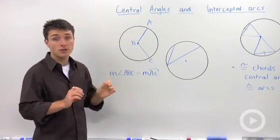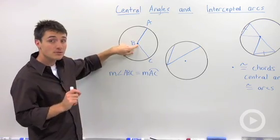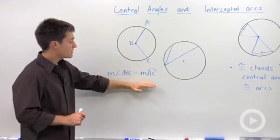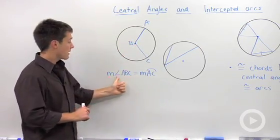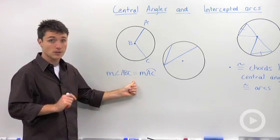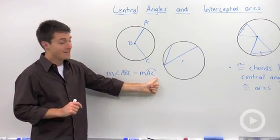Key facet of a central angle is that its vertex is at the center of the circle. This equation down here says that the measure of angle ABC, which is our central angle, is equal to the measure of arc AC.